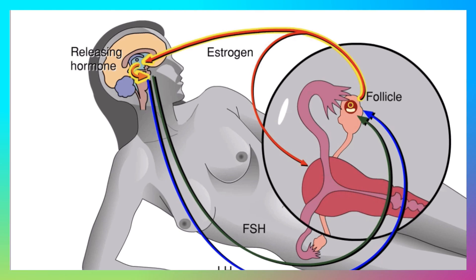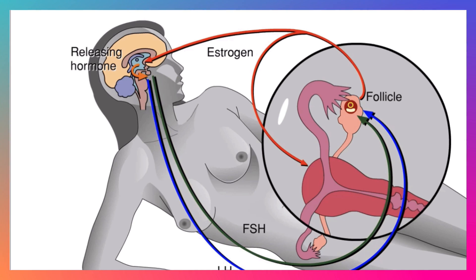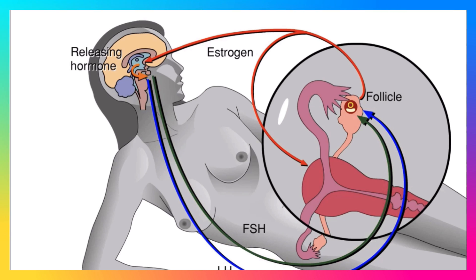Low levels of estrogen also exert negative feedback on the hypothalamus, keeping blood levels of FSH and LH relatively low. Basically, the brain triggers development of an egg, and the follicle containing the egg signals the uterus to prepare to support the development of an embryo. Negative feedback assures that only one follicle develops at a time.